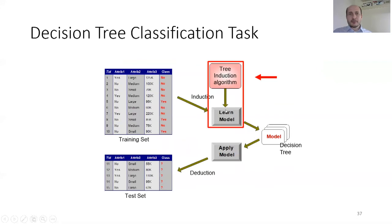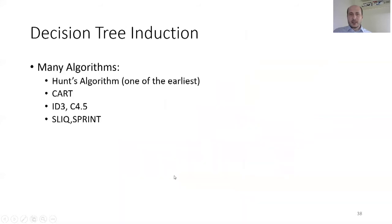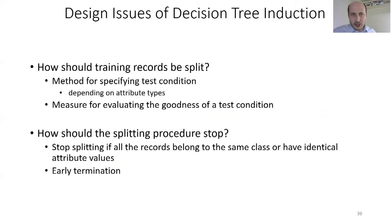We split data into a training set and a test set. Using the training set, we train our model and then apply it to the test set. Some decision tree algorithms include Hunt's algorithm — one of the earliest — CART, ID3 or C4.5, and SLIQ and SPRINT.